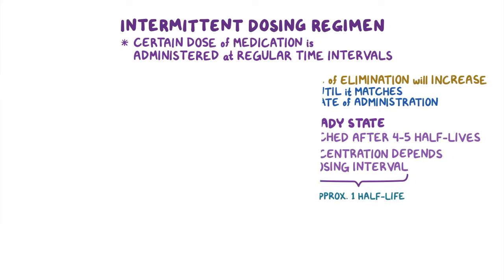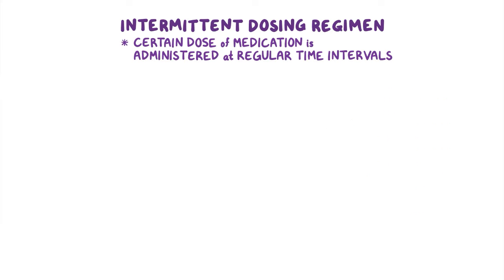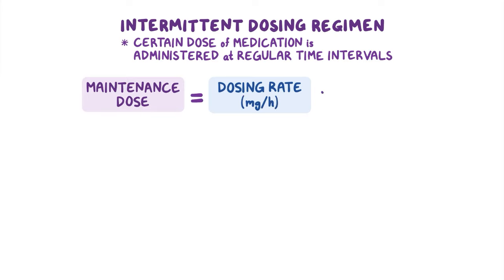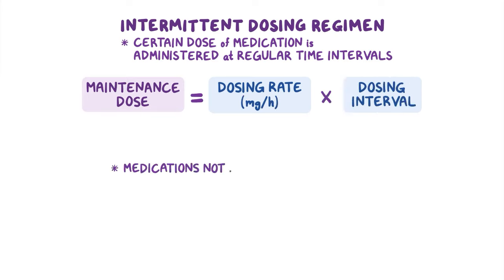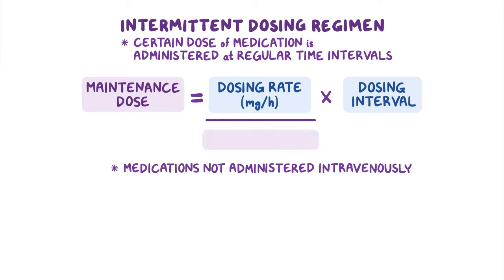With intermittent dosing, the maintenance dose is calculated by multiplying the dosing rate in milligrams per hour by the dosing interval. It's important to note that for medications not administered intravenously, the dosing rate needs to be divided by the bioavailability to account for the portion of medication that isn't absorbed into the circulation.